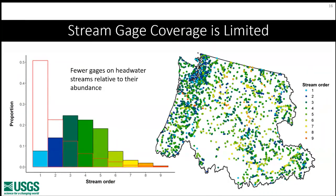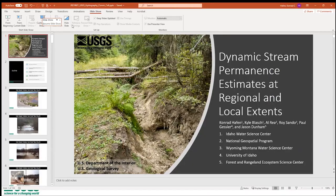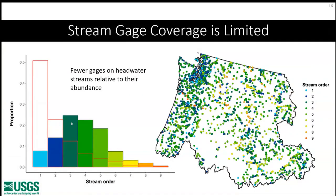Stream gauge coverage is limited. This figure shows gauges in the Pacific Northwest, with colors representing different stream orders — light blue for first order up to red for ninth order. The red outlines show the proportion of the stream network in each stream order from the medium-resolution NHD. The main takeaway is that a much larger portion of stream segments occur on first and second order streams than we have gauges for, which is simply an artifact of the priorities of that gauge network — not to monitor for ecological purposes.